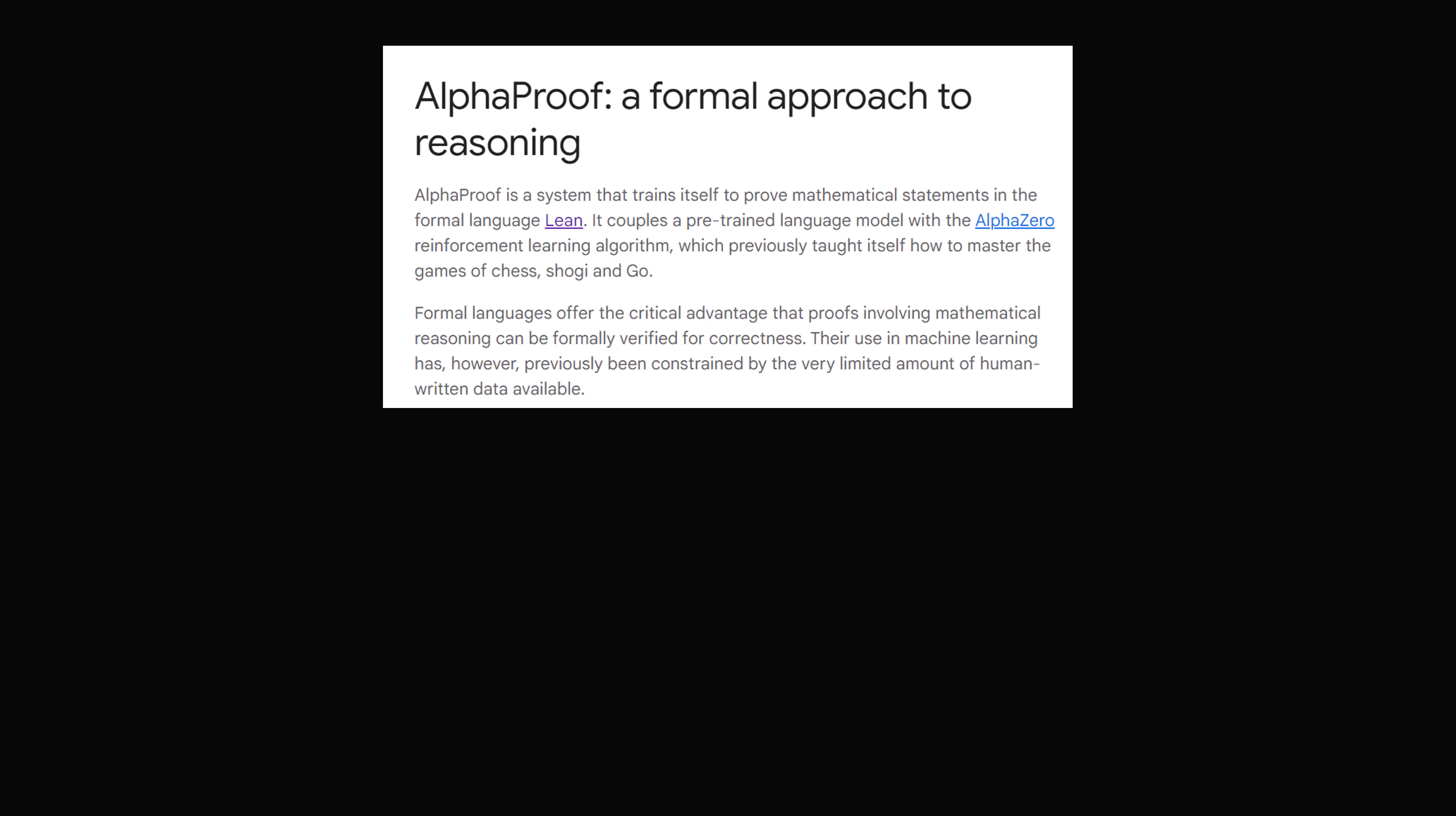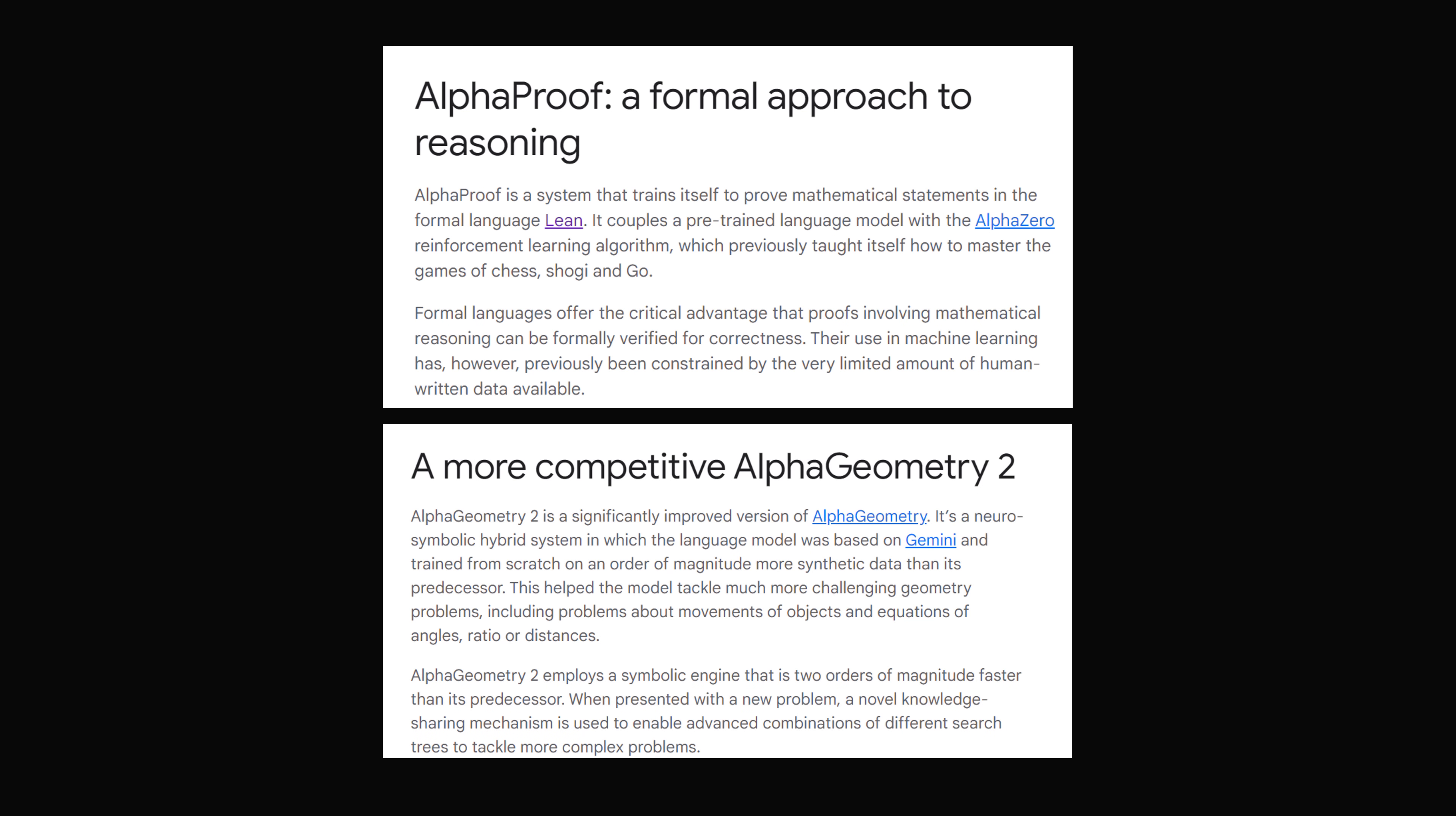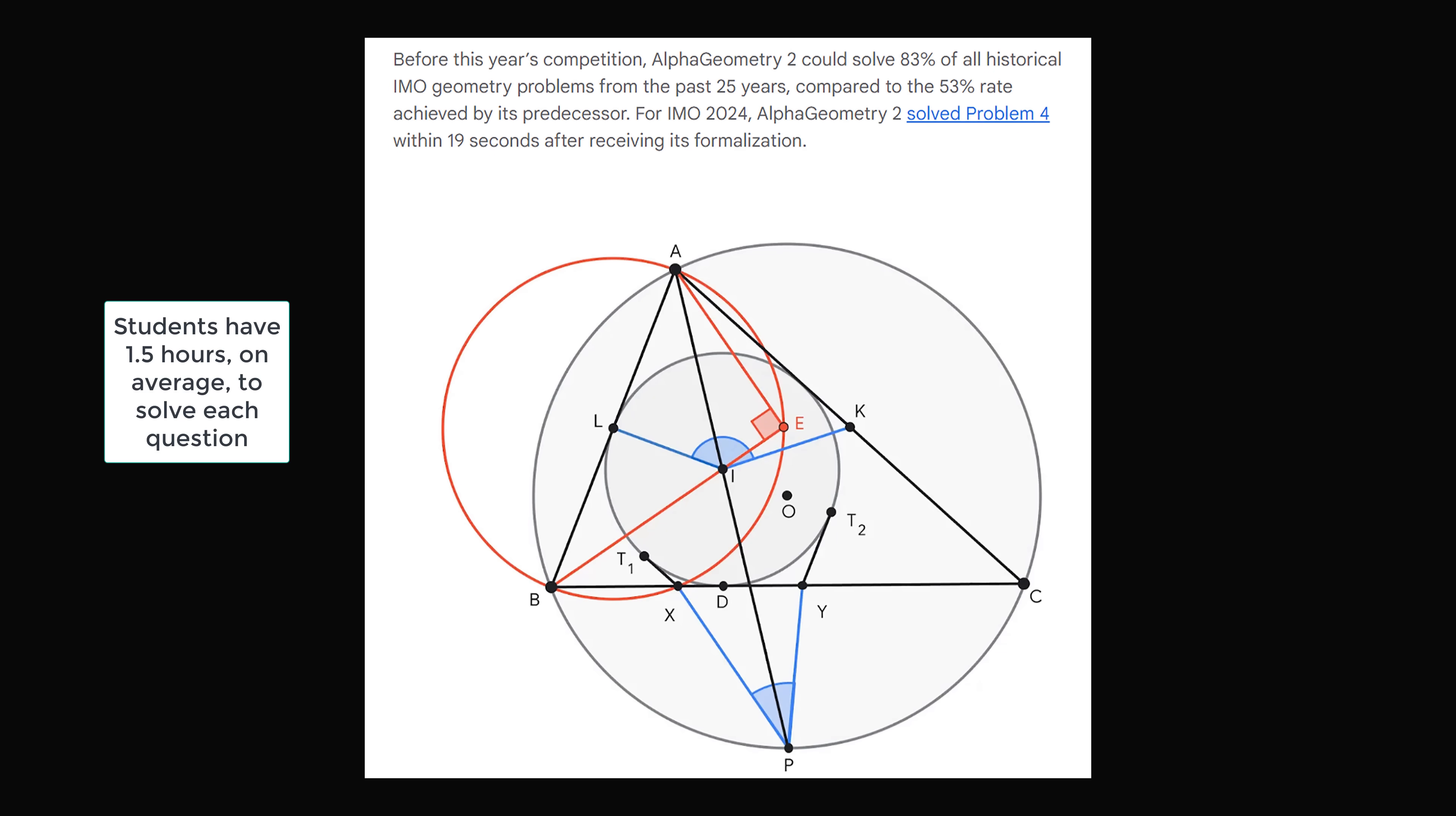Congratulations! Alpha Proof tackled two algebra and one number theory problem, while Alpha Geometry tackled the geometry question. And some of the performance was scarily good. Students have an average of one and a half hours to solve each question. Google's Alpha Geometry solved the geometry question in a mere 19 seconds! Wow!